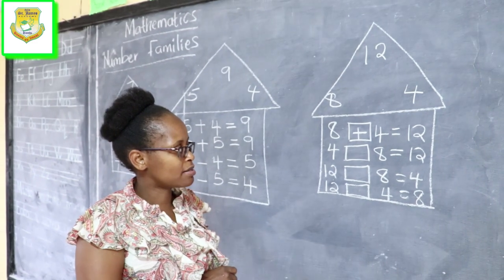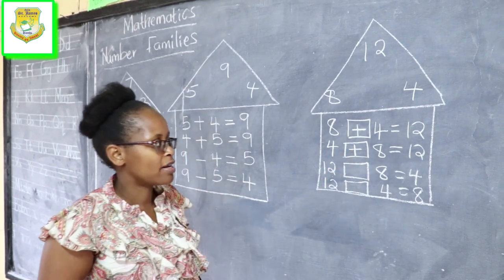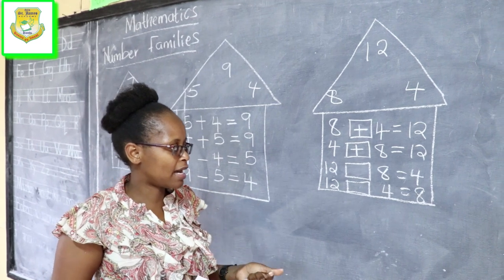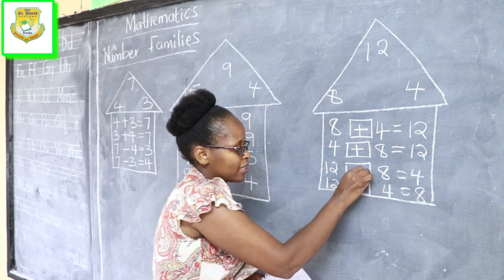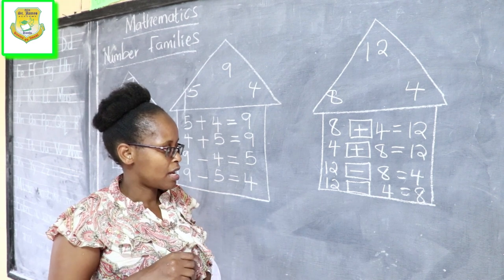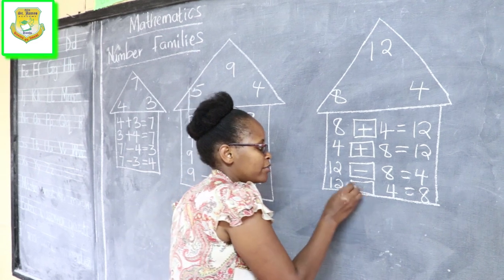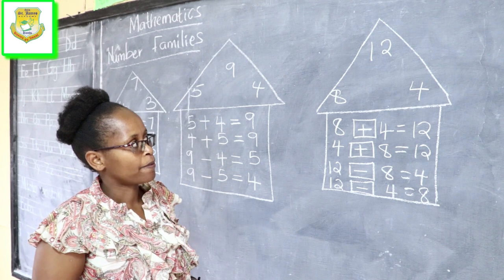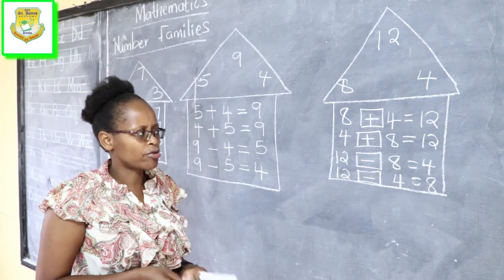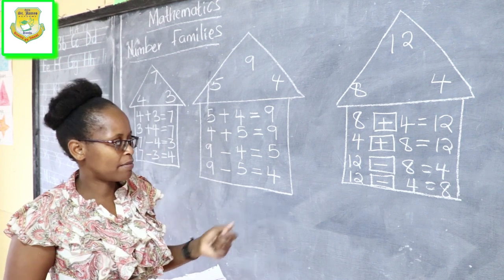When you reverse the numbers, we now start with 4, then 8 — still we are required to put an addition sign because you are going to add to give us 12. Then when you are starting with the bigger number, anytime the bigger number starts, make sure you put a take away sign, to show that you are taking a bigger number minus a smaller number to get another smaller number. So 12 take away 8 equals 4, and then 12 take away 4 equals 8 — you put a take away sign to show it is done correctly.